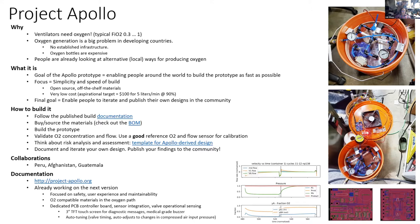To build it, you just follow the published documentation and check out the BOM, checking local sources for your materials. Some materials like zeolites have to be sourced from China, but generally we publish a detailed BOM on how to achieve that. After building a prototype, you have to validate oxygen concentration and flow, and for that you need a good reference oxygen sensor, which is also expensive. Unfortunately, that's the way of life — the quality of your design depends on the quality of your calibration.